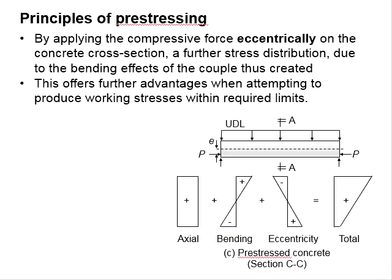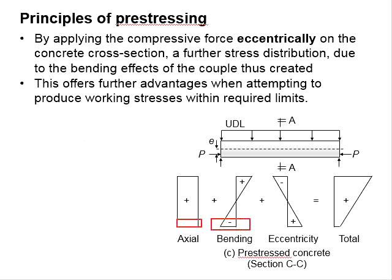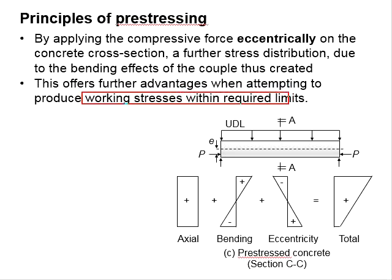This means that the summation of the axial, bending, and eccentricity stresses will equal the total stress at the top, while the combination of these stresses at the bottom will give you the total stress there. The eccentricity offers further advantage when attempting to produce working stress within the required limit.